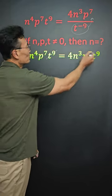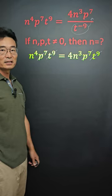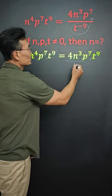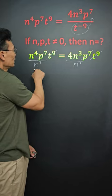Notice, once that's completed, we're able to cancel out t to the 9 and p to the 7 as well. At this point, we divide by n cubed on the left and right side.